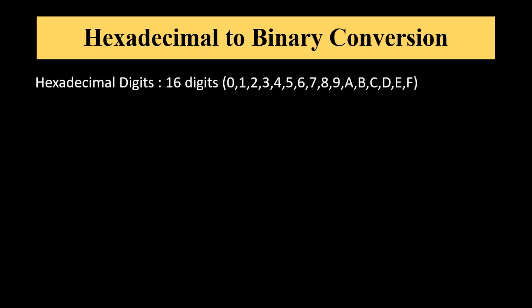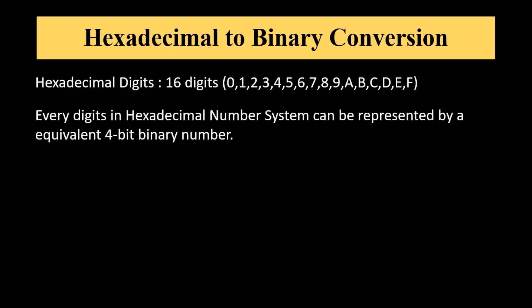Hexadecimal number has 16 digits, 0 to F. Every digit in hexadecimal number system can be represented by an equivalent 4-bit binary number.